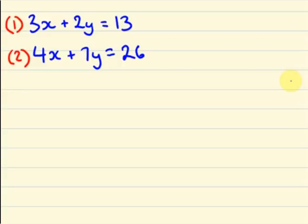Welcome to G-Tech. Today we are going to see about simultaneous equations. Here I have written two equations. My first equation is 3x + 2y = 13 and my second equation is 4x + 7y = 26.